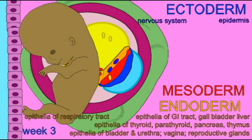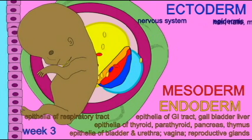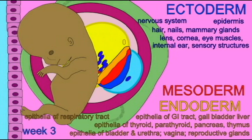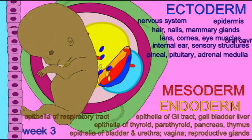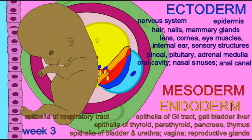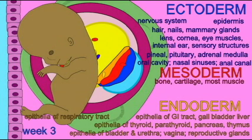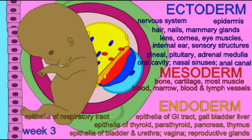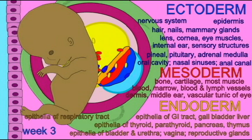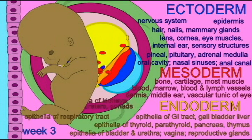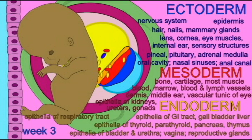Thus, in mosaics, the effects of a specific change would depend upon which cells in an individual's body were expressing the abnormal chromosomes, the gene mutation, or whatever the change might be.